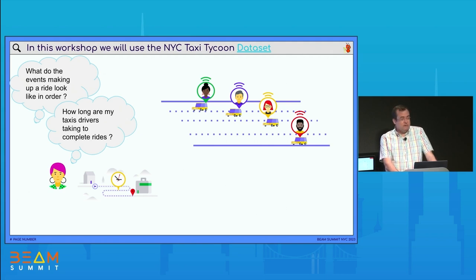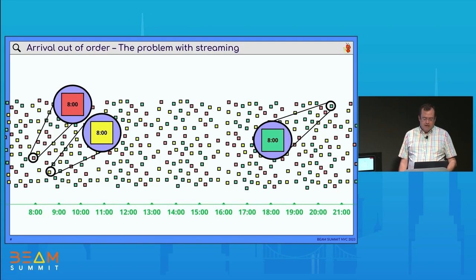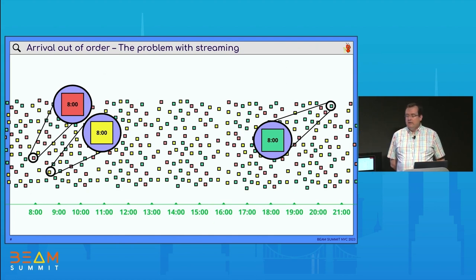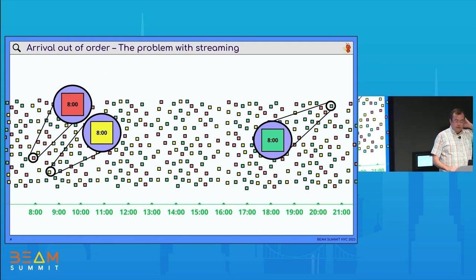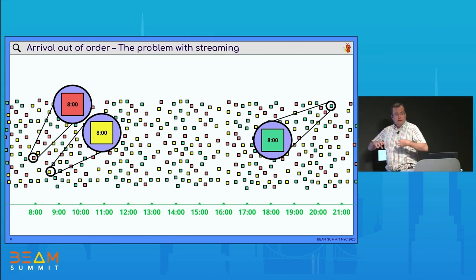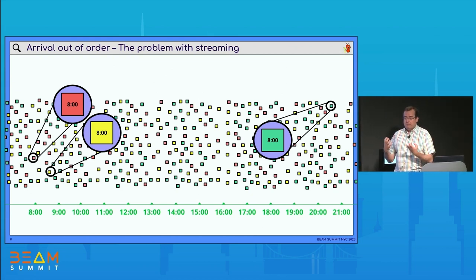This is a problem to do in streaming because the data is being sent continuously. Here we are working with a batch of data that has been preselected for the workshop, but in reality this is what things will look like — different taxis sending data over time, some with better connections. One taxi at 8 in the morning sends data right away; another sent it a little bit later; another like hours after, maybe because it didn't get Wi-Fi. So this is the problem we are going to be solving: putting together things that belong together in streaming with Apache Beam.